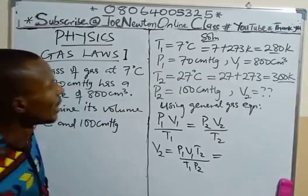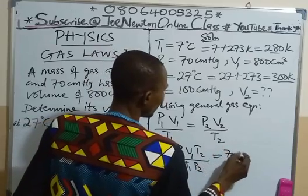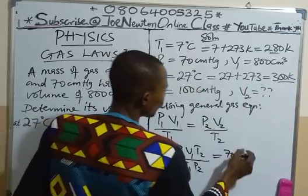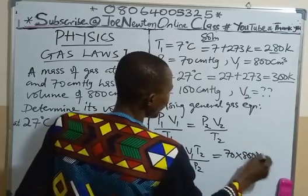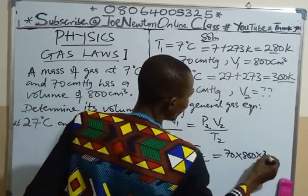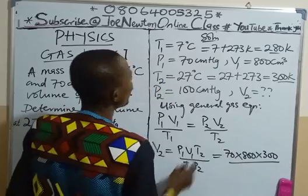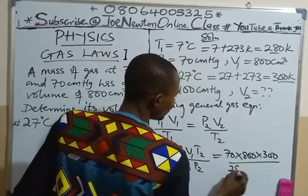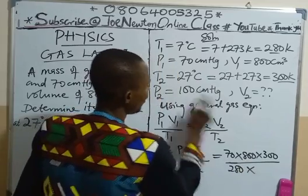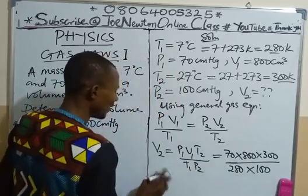Then we substitute. When we substitute, we have P1 is 70, times V1 which is 800, times T2 which is 300, all over T1 which is 280, times P2 which is 100. Then we simplify.